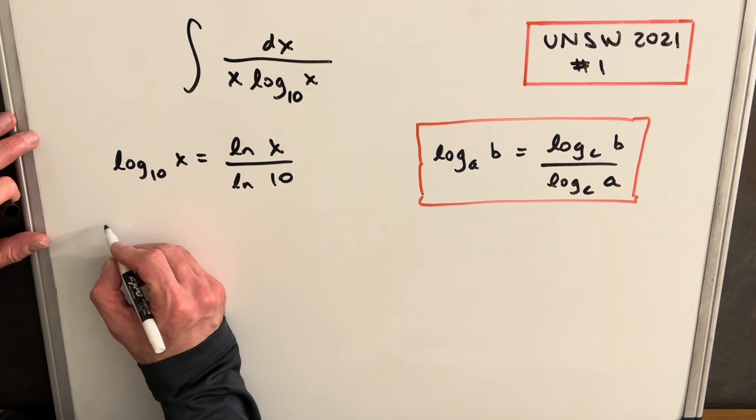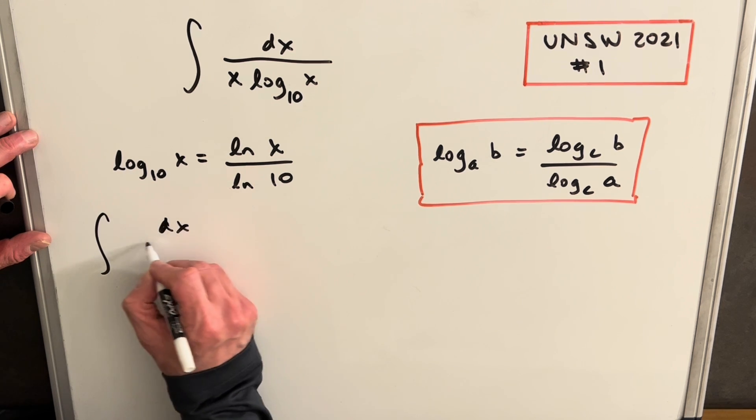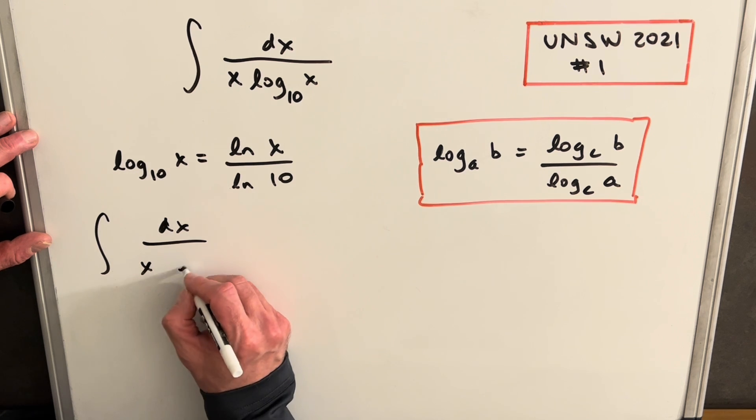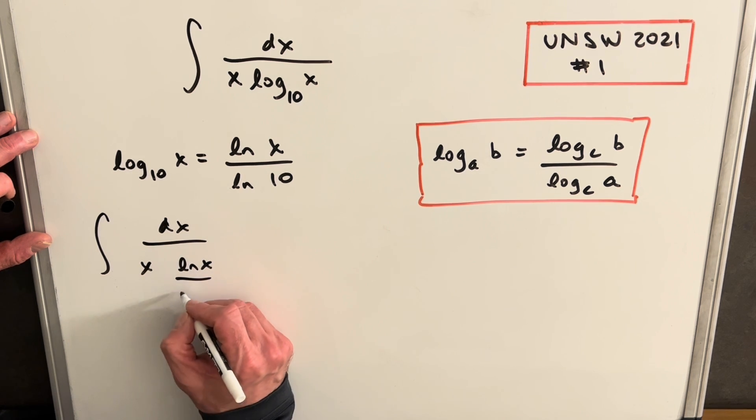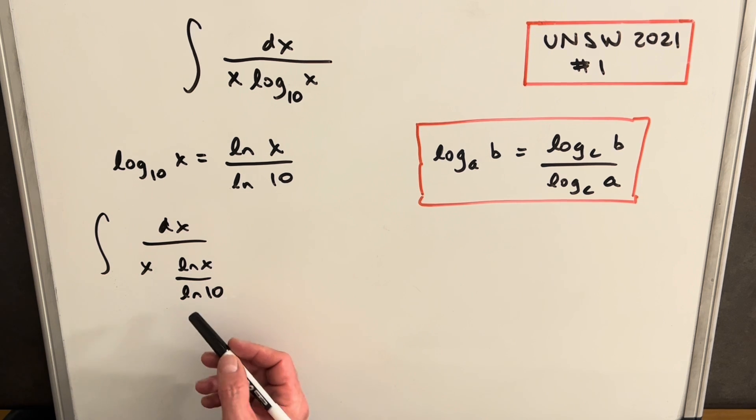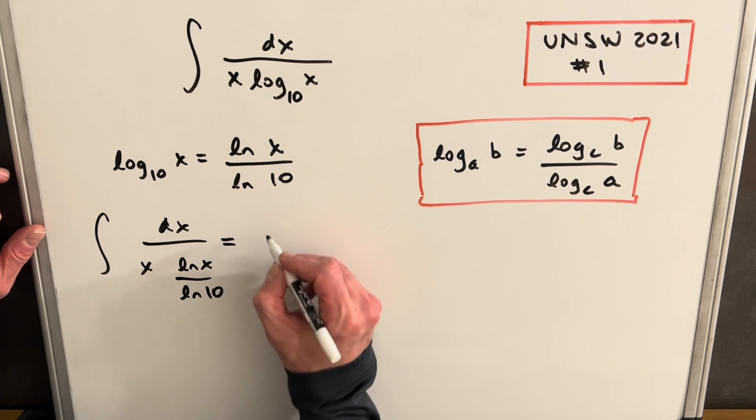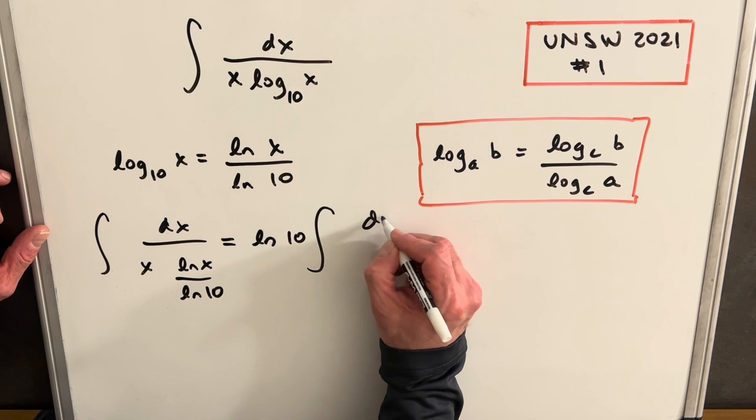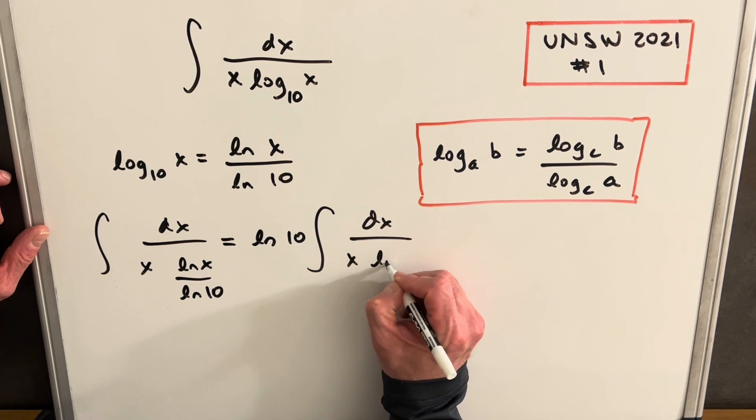So then we can rewrite this integral. We're going to have dx over x, and then we'll plug in for log base 10 of x. We're going to have natural log of x over natural log of 10. But natural log of 10 is just a constant value, so we can pull it outside of the integral. We'll flip it and put it in the numerator, so we'll have ln 10 out front of this integral: dx over x ln x.